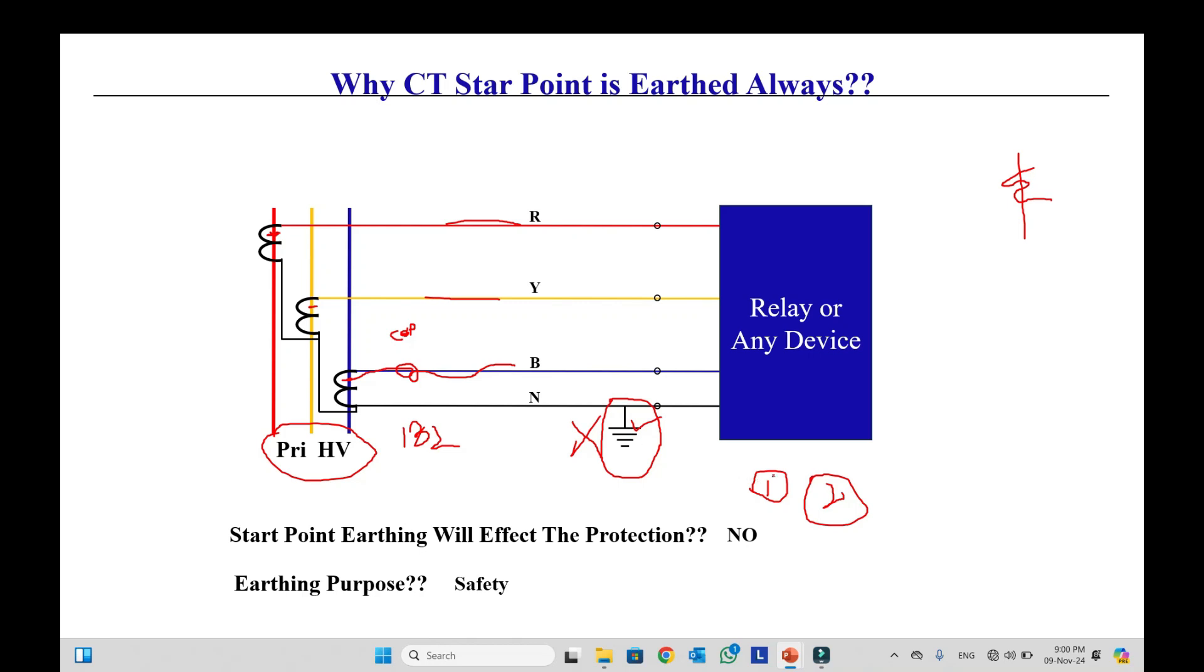So there are two reasons. For protection? No. For measuring? No. But its purpose is safety. So two types of safety I discussed with you. This is the intended purpose of the CT earthing. So now I hope you got the idea why we earth the CT star point.